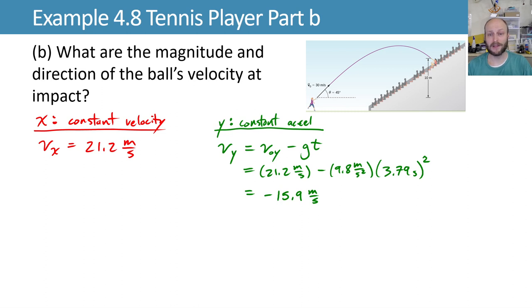We can then combine those and say the vector expression of our velocity is going to be 21.2 in the i-hat minus 15.9 in the j-hat with units of meters per second. But that's not what we want. We want the magnitude and direction. So this is a correct expression of the final velocity, but I want that as magnitude and direction.